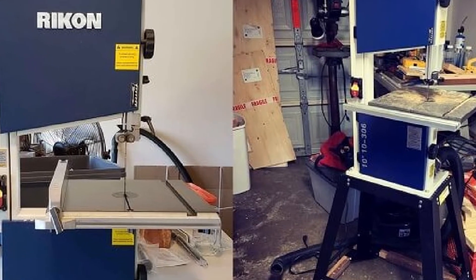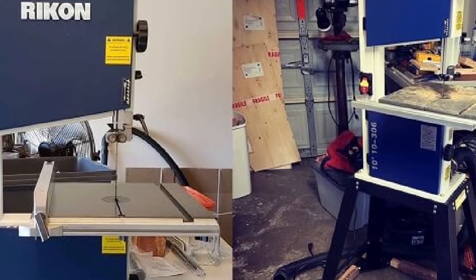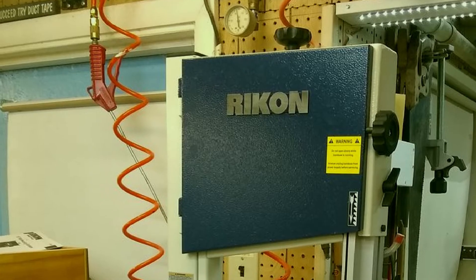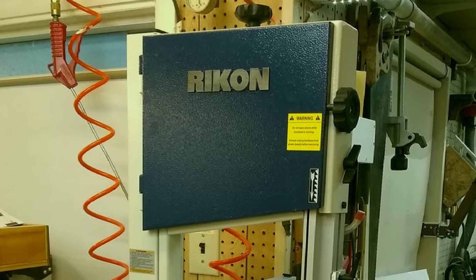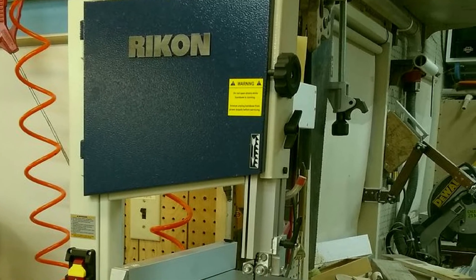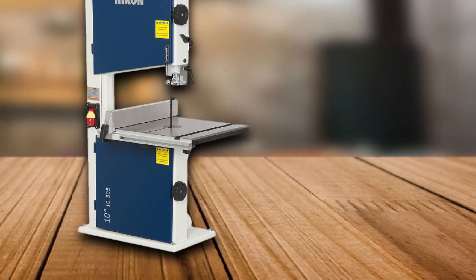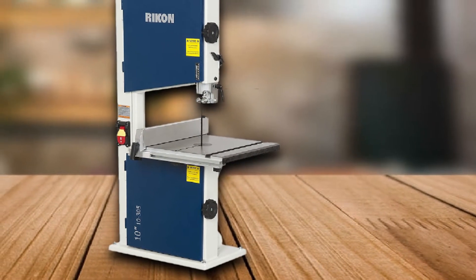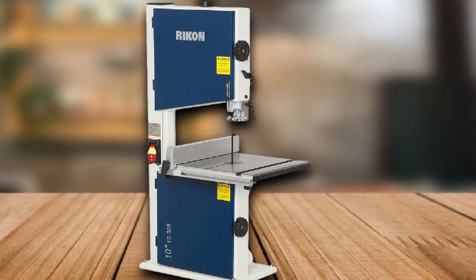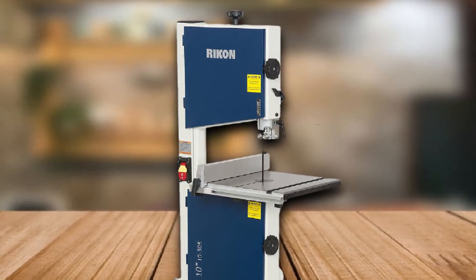It's one of the best-selling woodworking bandsaws that you can find on the market. Its table can tilt up to 45 degrees going right and 0 degrees to the left. The speed of the blade can reach 2,780 feet per minute, which is an impressive figure. Above all, this tool comes with a tracking adjustment that is quite easy to handle. It weighs 76 pounds.